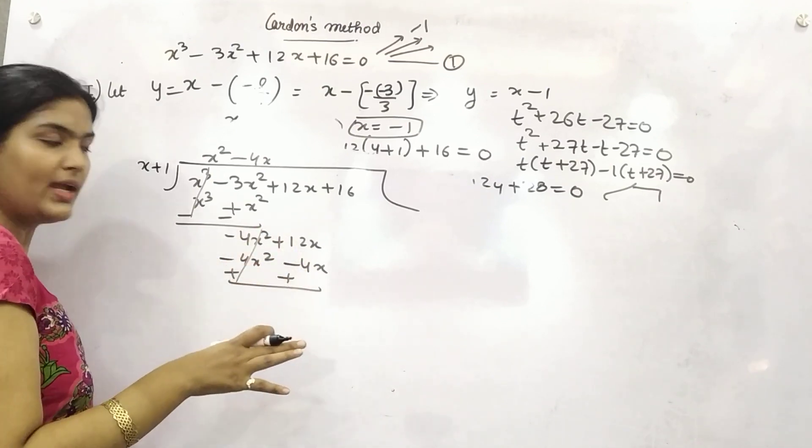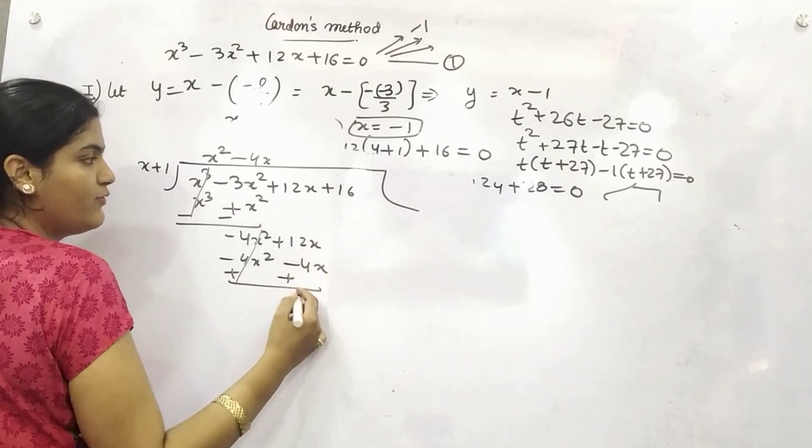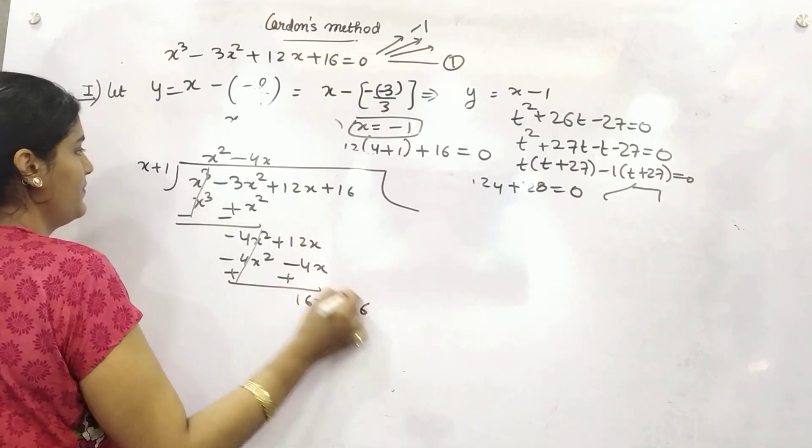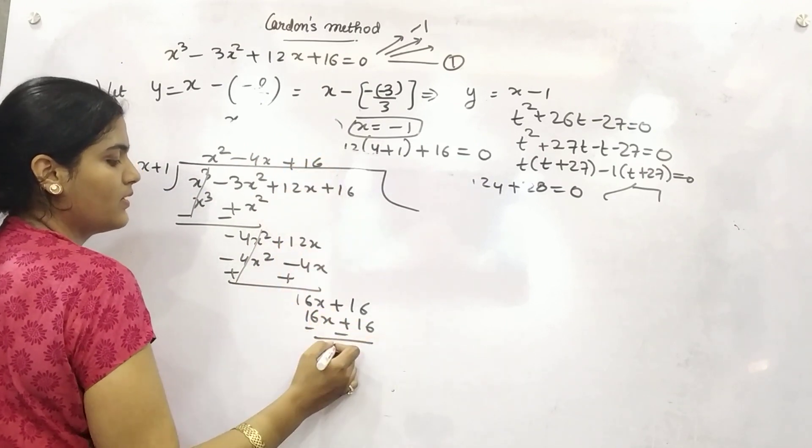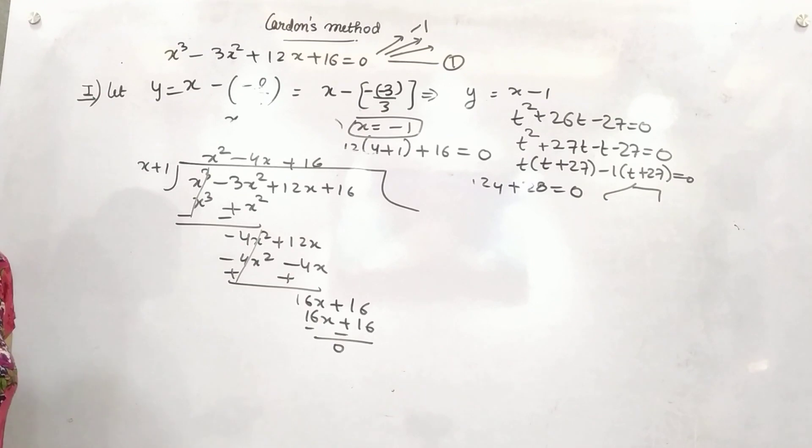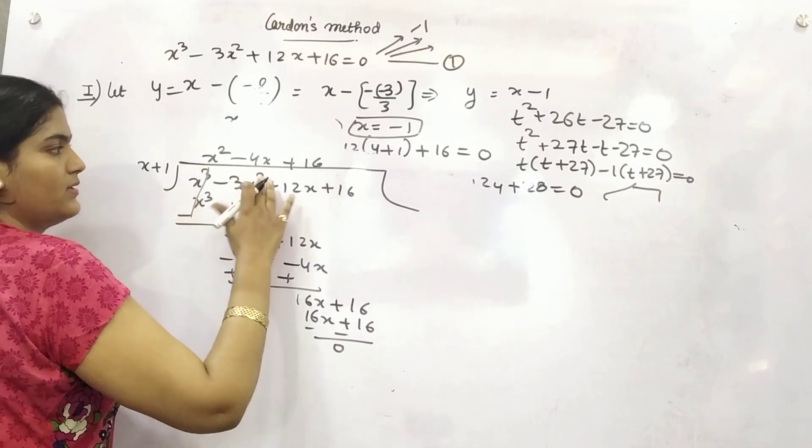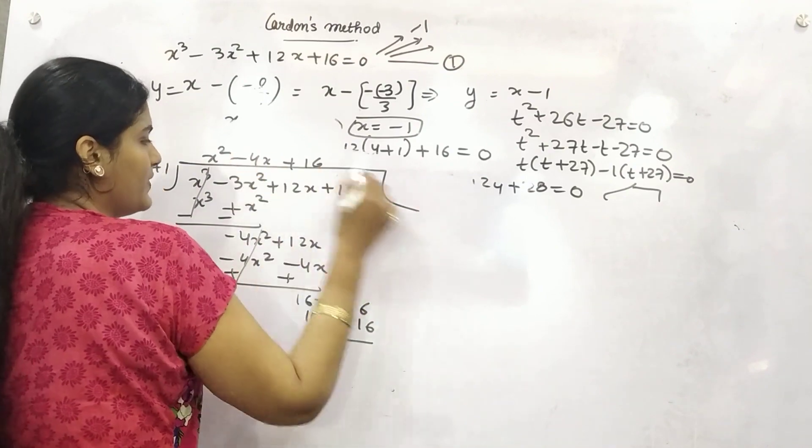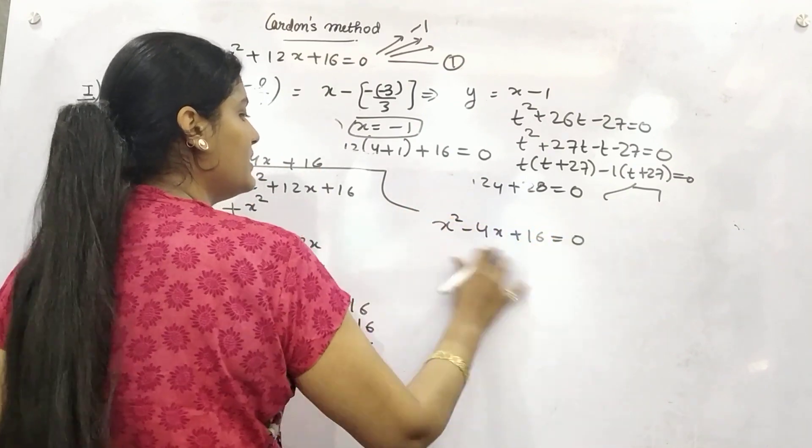You need to change the sign, right? I know you know, but just for a reminder, 12 and 4, 16x plus 16. So 16x plus 16, you have got 0. Obviously, you should have it because this is the factor of this, right? Now, this is your equation. So for another two roots, you need to solve this equation.